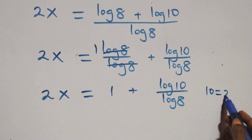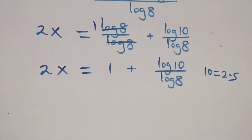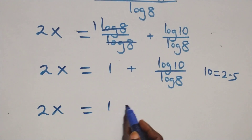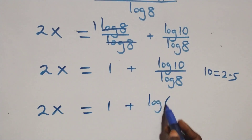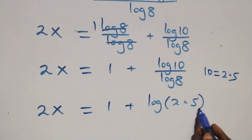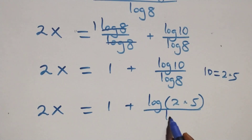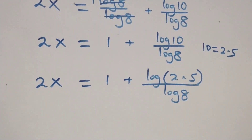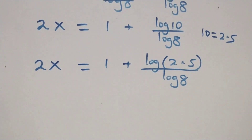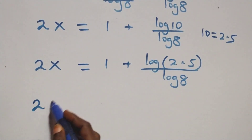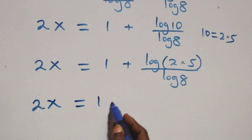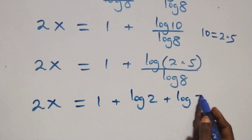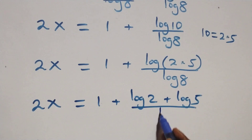Then 10 can be written as 2 times 5, which implies 2x equals 1 plus log of 2 times 5 over log 8. This also follows the law of logarithms, so what we have becomes 2x equals 1 plus log 2 plus log 5, all over log 8.